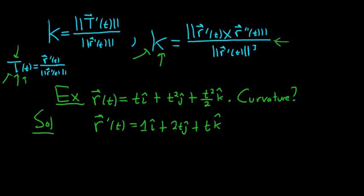So we need the second derivative now, so r''(t). That's simply going to be 0i. Notice I put the 0 there, it's just a good reminder to have it because we have to take the cross product. The derivative of 2t is 2, and then the derivative of t is 1, so we get 1k.